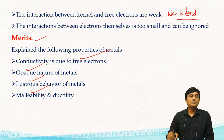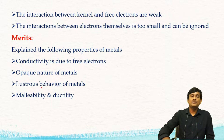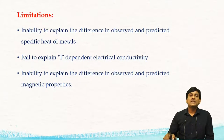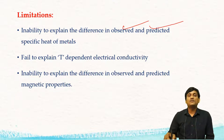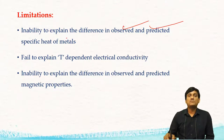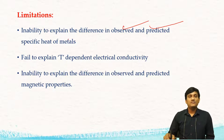But this theory has some limitations, some demerits. It failed to explain the difference in observed and predicted specific heat of metals. There is a difference in the theoretical value of specific heat and the practical value of specific heat — this was not explained by the free electron theory.